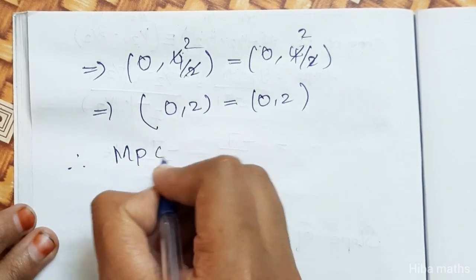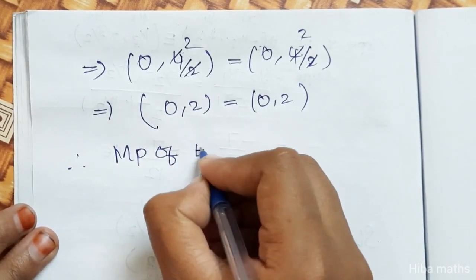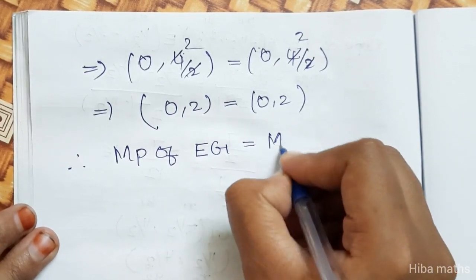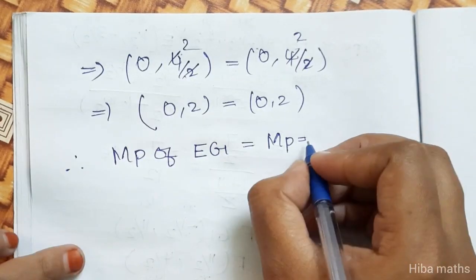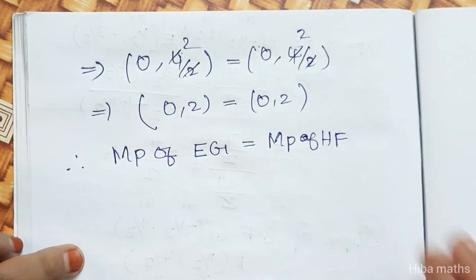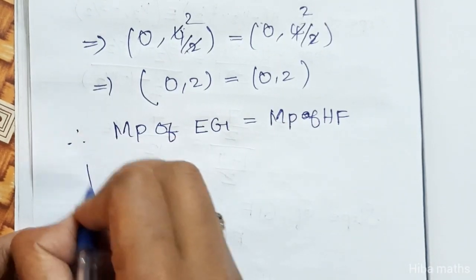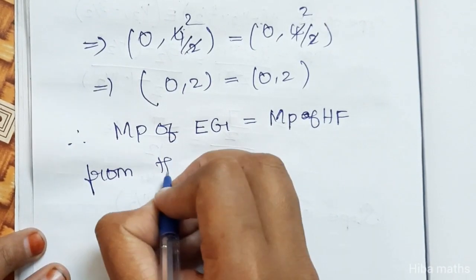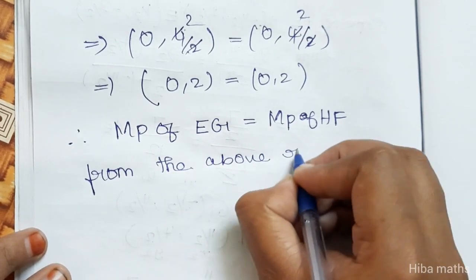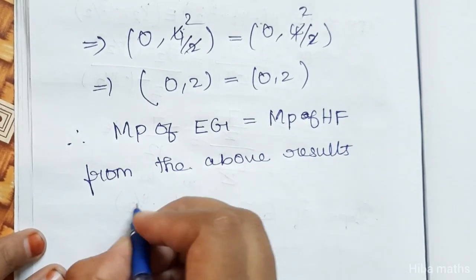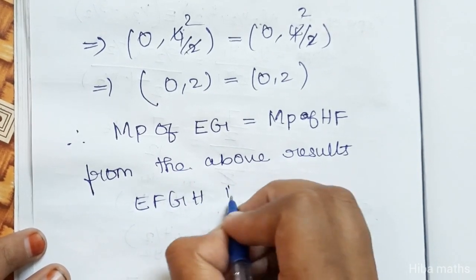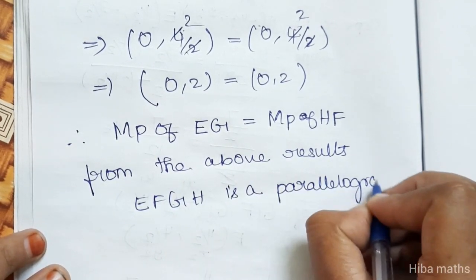From the above results, the midpoint of EG is equal to the midpoint of FH. Therefore EFGH is a parallelogram. Thank you so much for watching. See you next time.